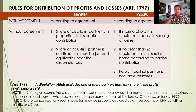Under Article 1799, if there is an agreement or stipulation which excludes one or more partners from any share in the profits and losses, this stipulation or provision is void — meaning it has no legal effect.